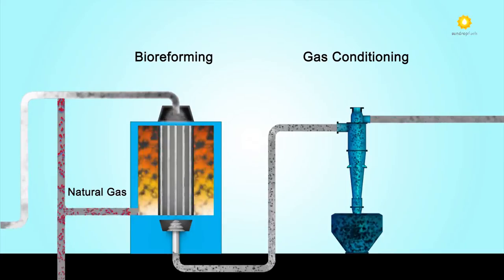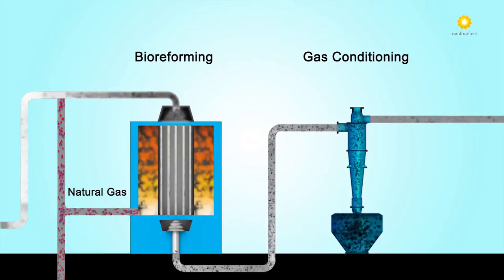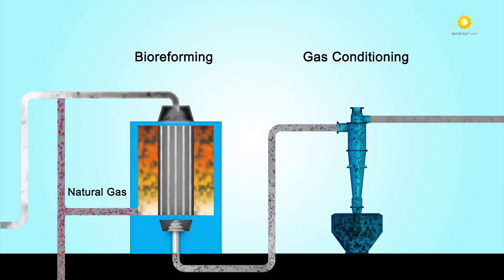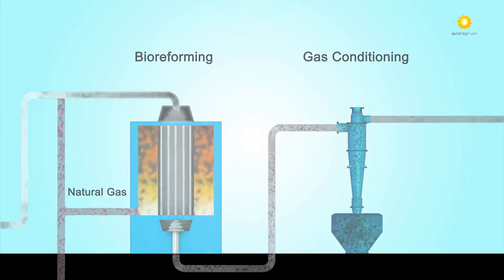During the gas conditioning phase, the small amount of remaining ash is removed and collected before sending the syngas along for further upgrading.